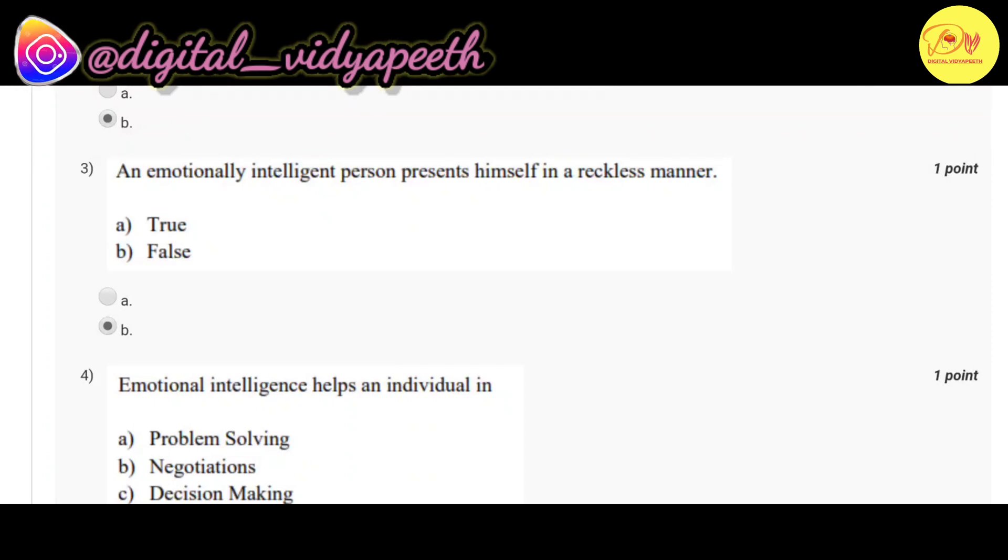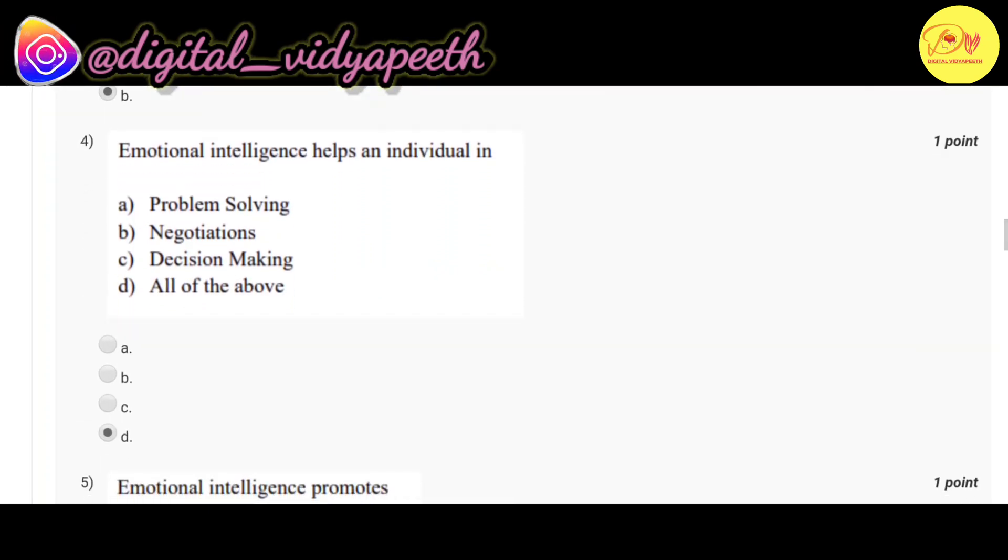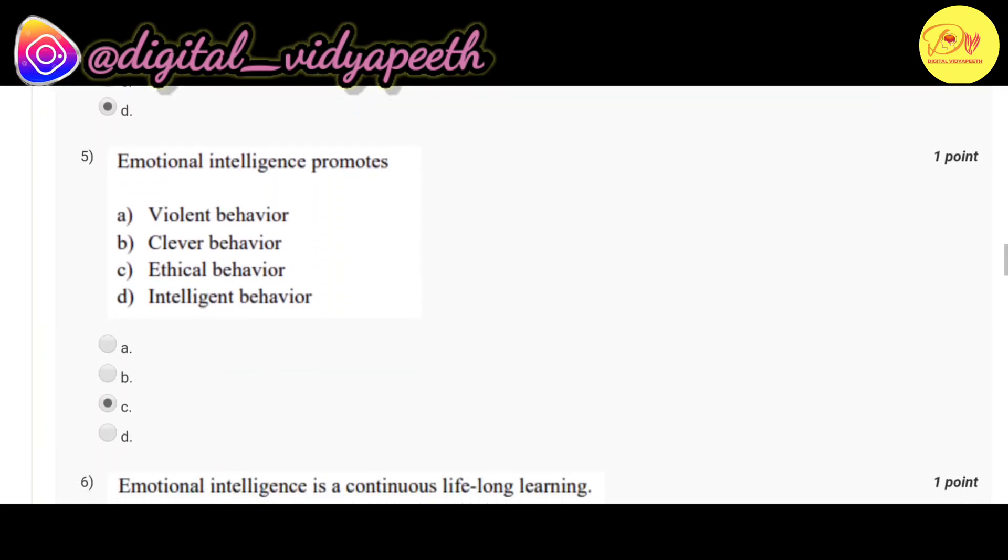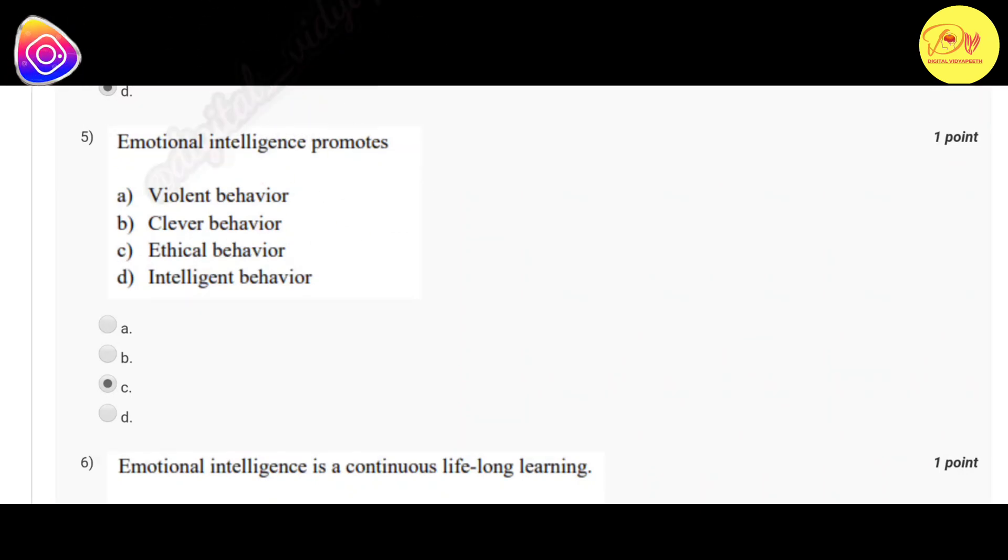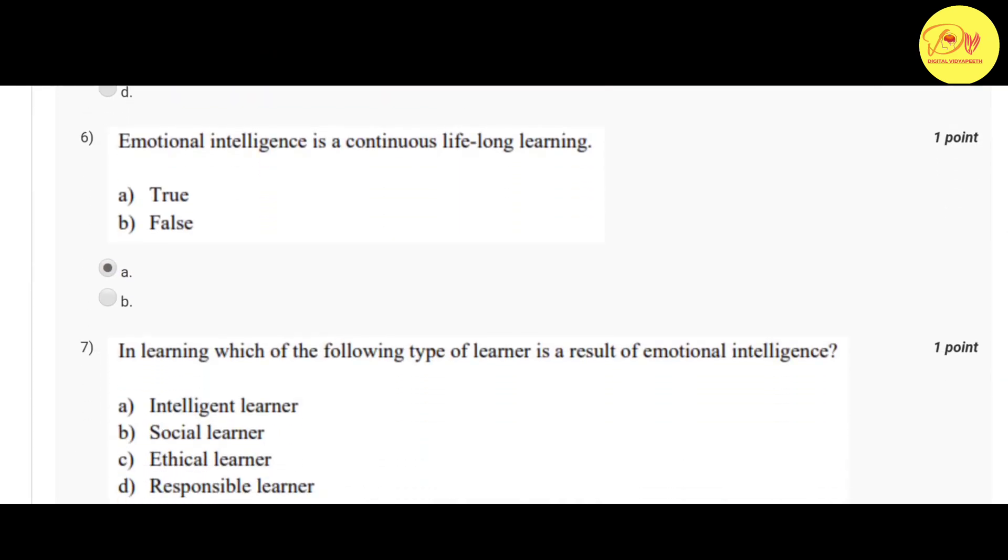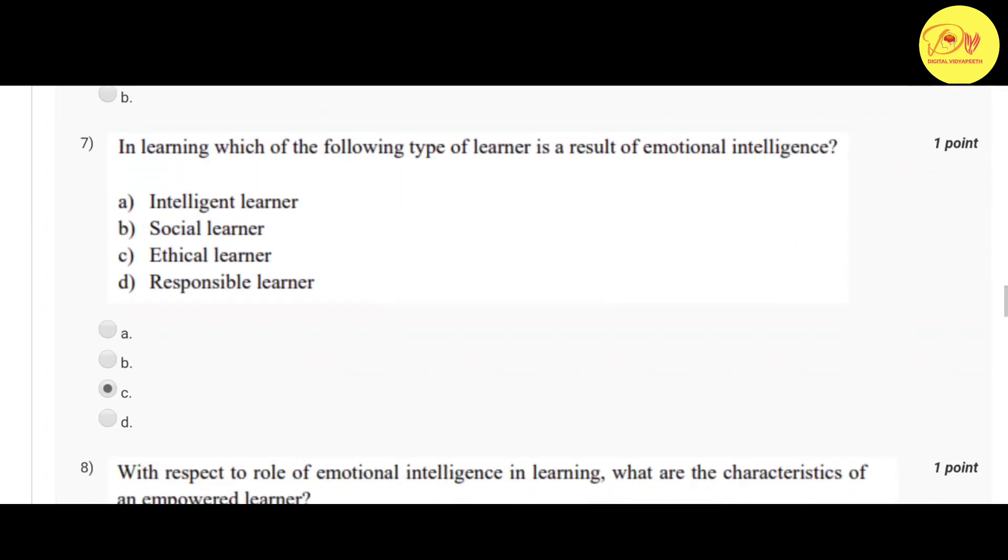Our third question is: an emotionally intelligent person presents himself in a reckless manner. Correct option is B, false. Our fourth question is: emotional intelligence helps an individual in. Correct option is D, all of the above - that is problem-solving, negotiations, and decision-making. Our fifth question is: emotional intelligence promotes. Correct option is C, ethical behavior.